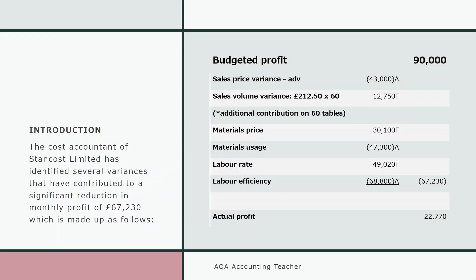The way I would start this — and this isn't looking much like an essay because of the PowerPoint formatting — I would start with an introduction. You wouldn't necessarily need to label it 'introduction', but I'd say something like: the cost accountant of StanCost Limited has identified several variances that have contributed to a significant reduction in monthly profit of £67,230 — that's the difference between the budget and the actual — which is made up as follows. I've included a little schedule starting with budgeted profit, then adding and subtracting variances as necessary. An adverse variance will reduce profit; a favourable variance will increase it. With the sales volume variance, it's only the additional contribution that affects profit, so just be careful there. All the others are as given, just put into a table to highlight where the problems are.